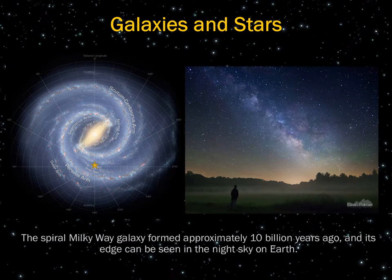Galaxies form as the stars coalesce — meaning the stars are drawn towards one another due to differences in their mass and gravity. In space, larger objects tend to have a greater gravitational hold onto smaller objects. Our spiral Milky Way galaxy formed approximately 10 billion years ago, and its edge can be seen in the night sky on Earth. The center of the galaxy contains a supermassive black hole, and the sun is 10,000 light years away from that center point.